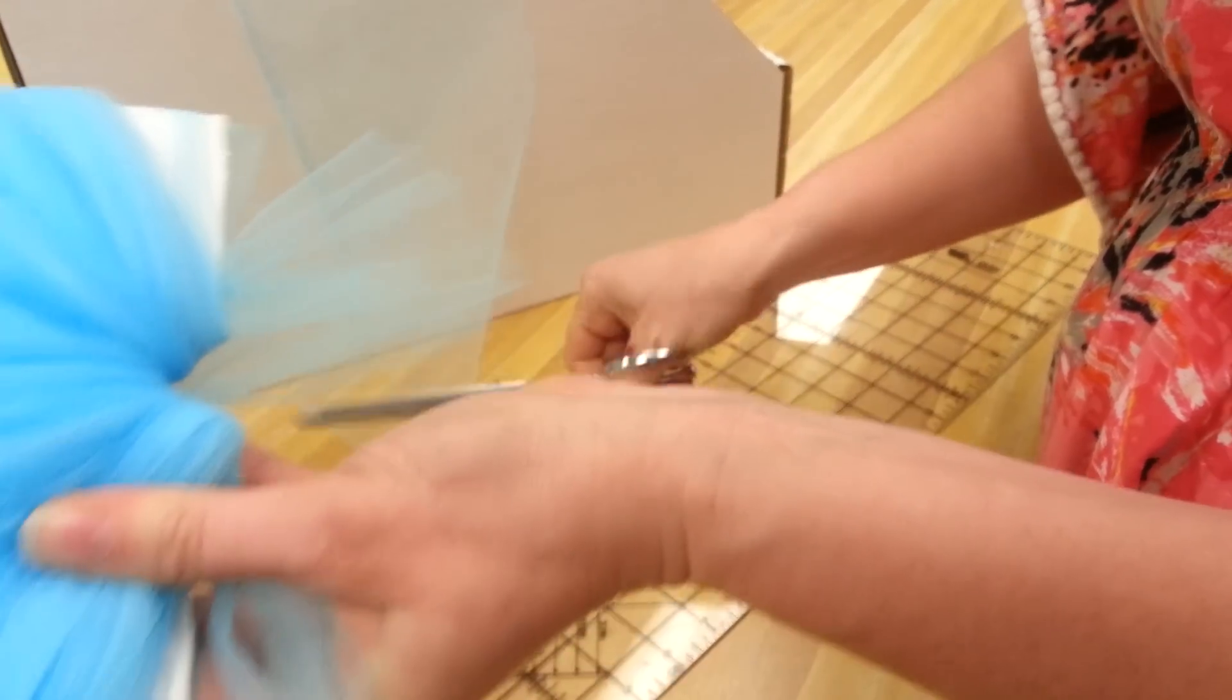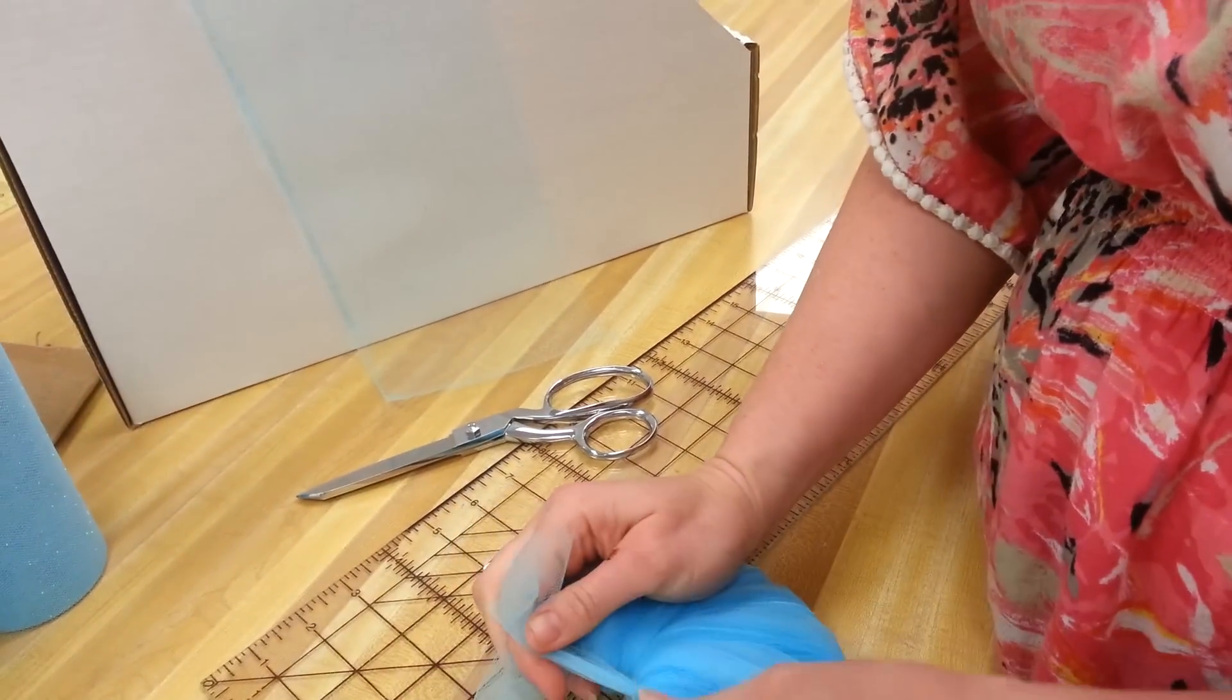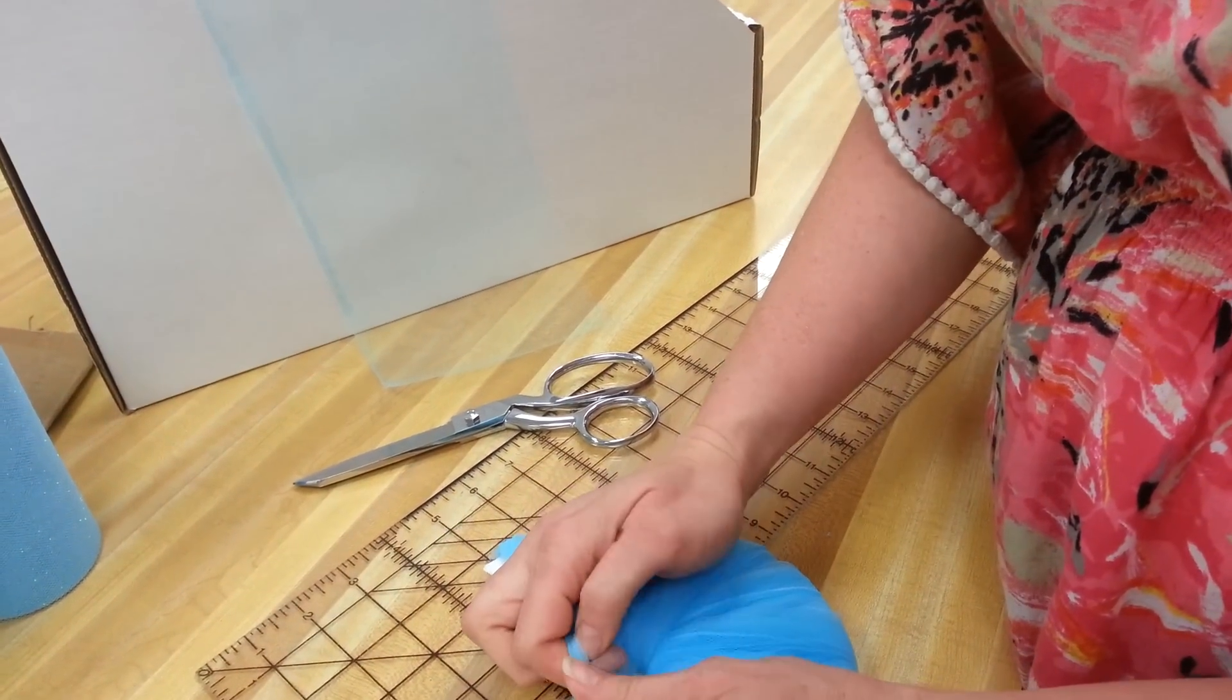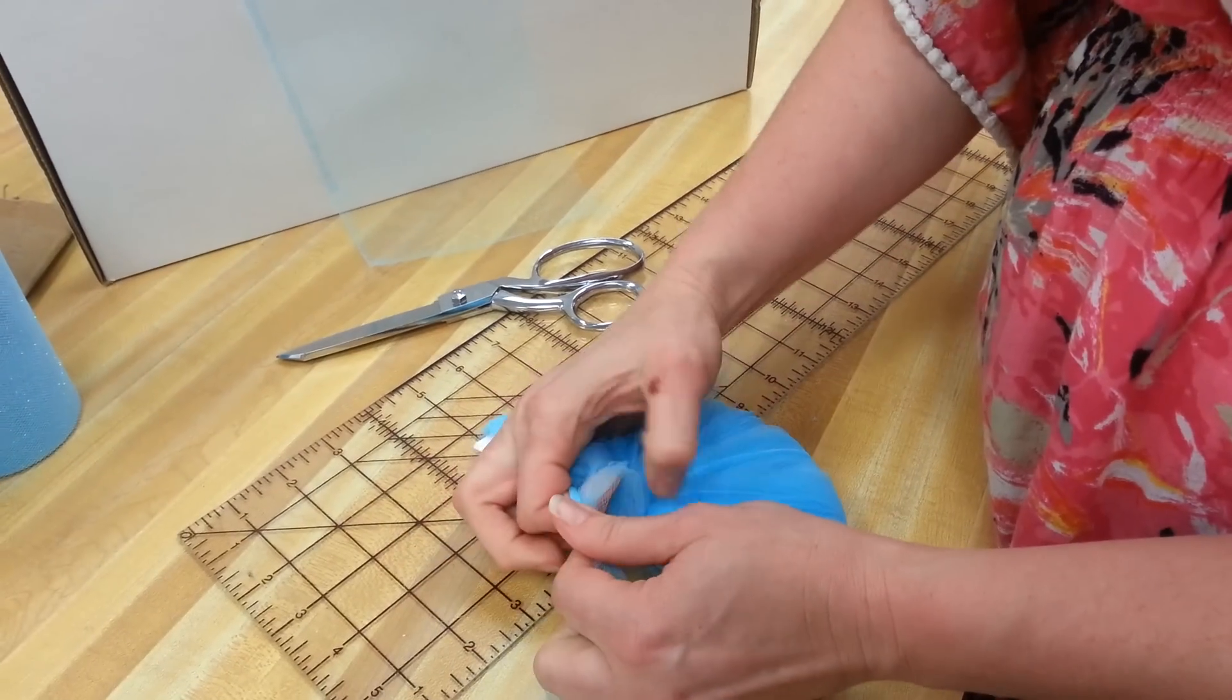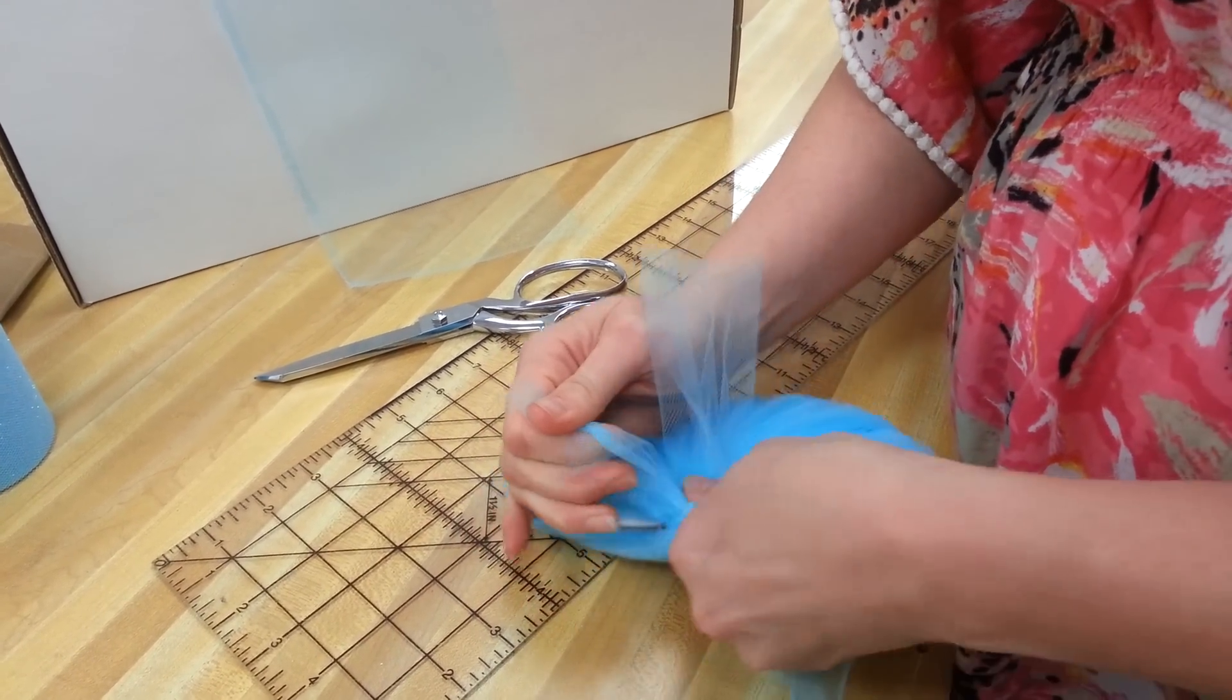We're going to cut that off. We're going to take the ties that we started with before, and I always double wrap at this point just so it will hold the knot. Pull it tight. Grab it.